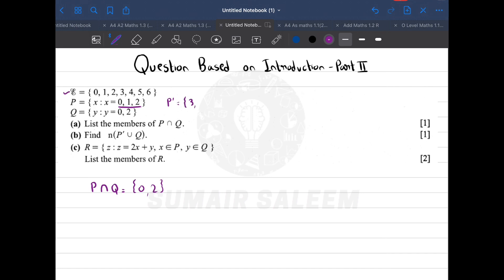Now you need P complement union Q: all elements of P complement and Q, but those which are repeated you write only once. So: 0, 2, 3, 4, 5, and 6.